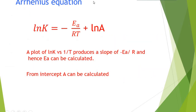The Arrhenius equation can be written as: ln(K) = minus Ea divided by RT, plus ln(A), where Ea is the activation energy, A is the pre-exponential factor, R is the universal gas constant, and T is the temperature in Kelvin.